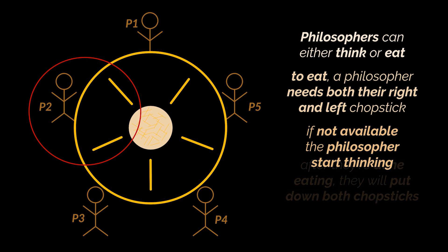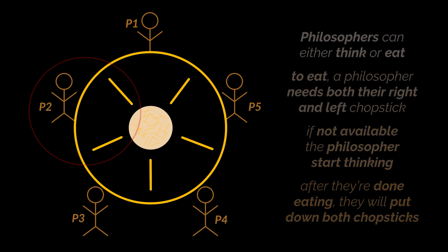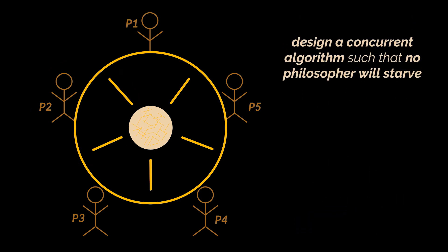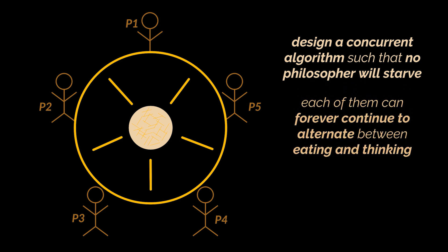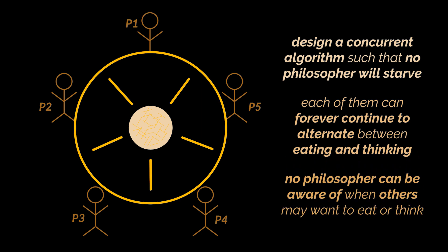After an individual philosopher finishes eating, they will put down both chopsticks. The problem here is to design a concurrent algorithm such that no philosopher will starve, i.e., each of them can forever continue to alternate between eating and thinking, while keeping in mind that no philosopher can be aware of when others may want to eat or think.